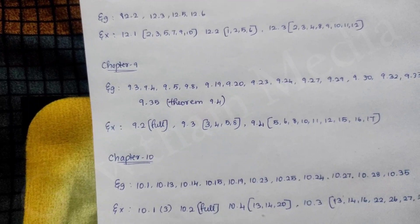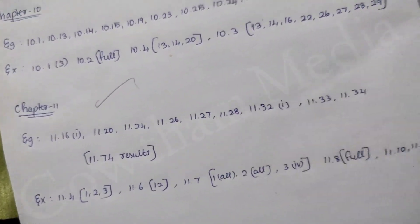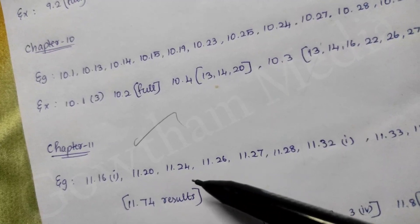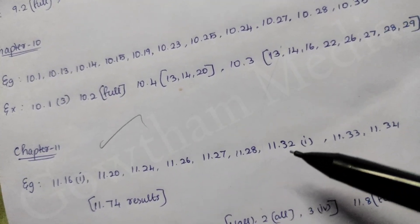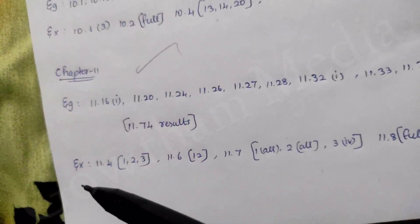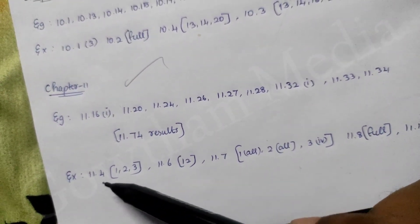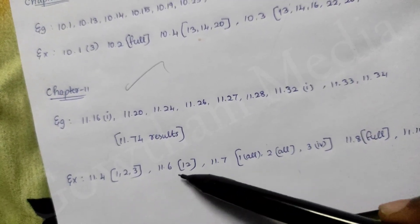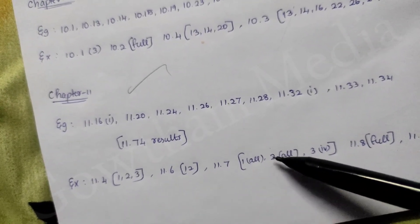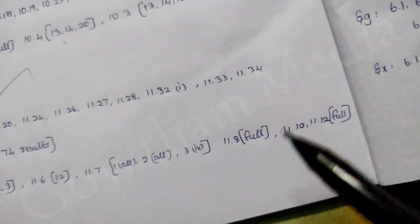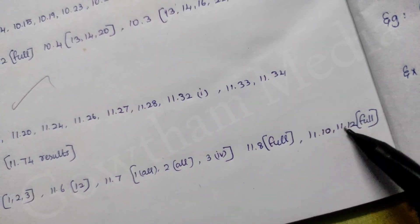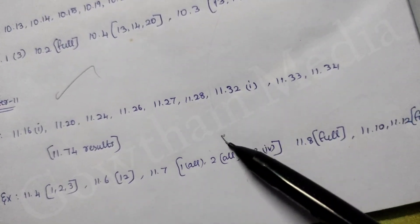That is the last chapter, chapter 11. In that chapter you will find examples: 11.26, 11.27, 11.28, 11.32, 11.33, 11.34, 11.74. Exercise: 11.4 — 4th sum, 1st sum, 2nd sum, 3rd sum. 11.6 — 12th sum. 11.7 — 1st sum, 2nd sum, 3rd sum. You can check it out in 11.8, 11.10, and 11.12.